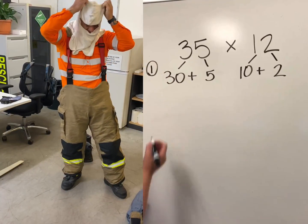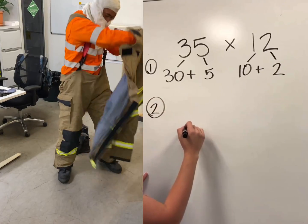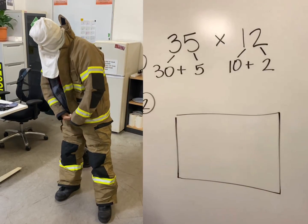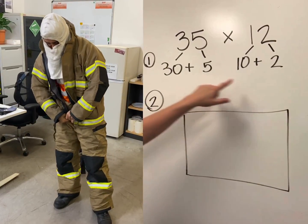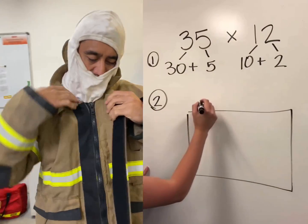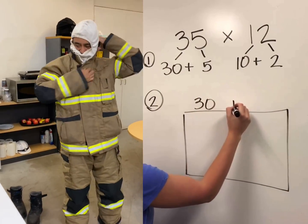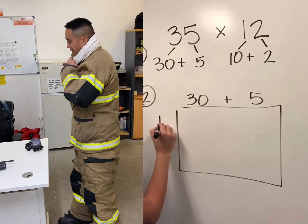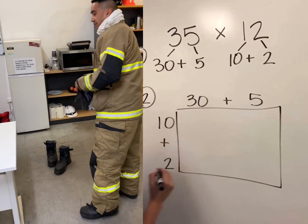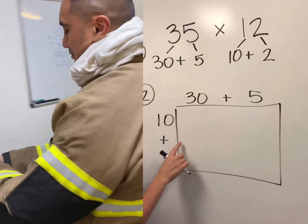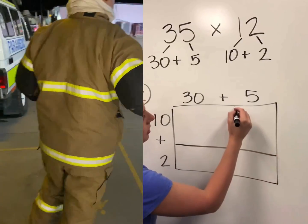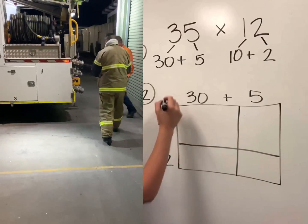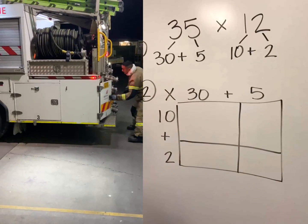The next step is to draw a large box. On this box we're going to put both of our expanded numbers. On the top I'm going to put 30 plus 5, and on the side I'm going to put 10 plus 2. Where your plus signs are, draw lines through the middle and down. And in the very corner we're still multiplying, so I'm going to put a big multiplication sign.